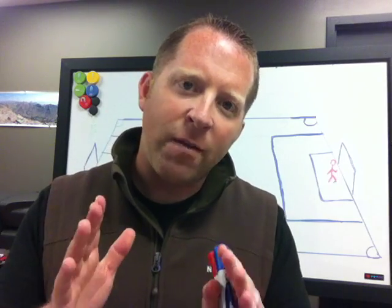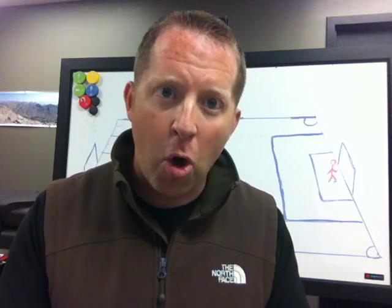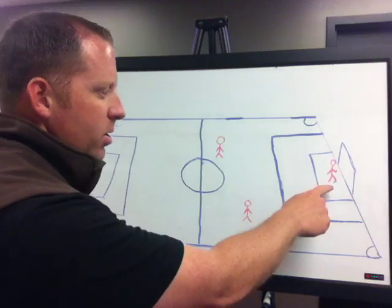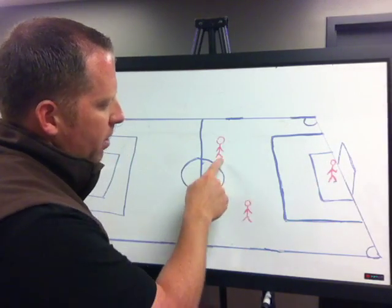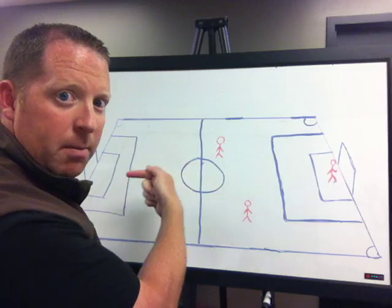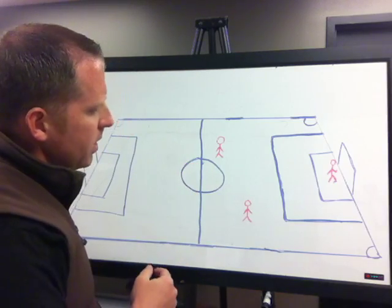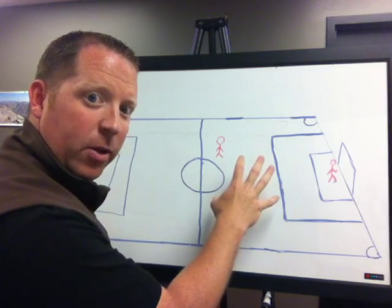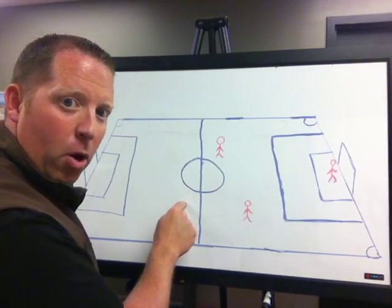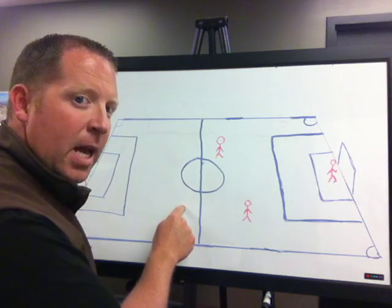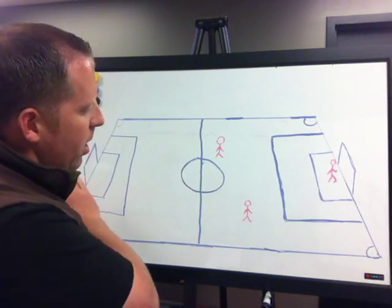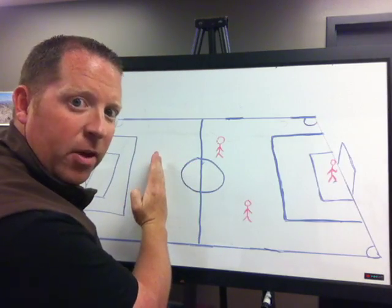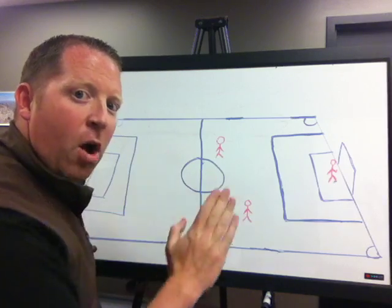The first thing we want to establish is that offside can only be called on the attacking end of the field. Let's look at the field here — here's our goalie and here are a couple of defenders for the red team, going this way to my left. Offside on the attacking team can only be called on this end of the field. If there's an attacking player on their own side of the field, the side that they're defending, offside cannot be called no matter how in the offside position that person is.